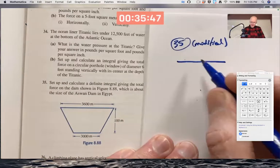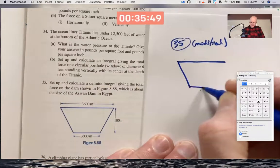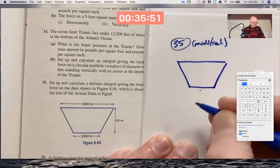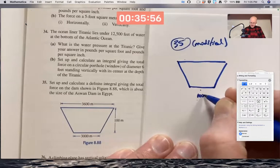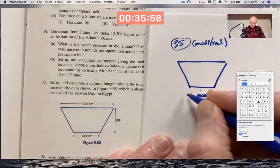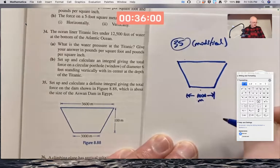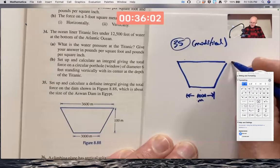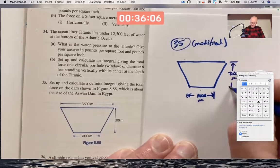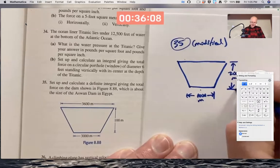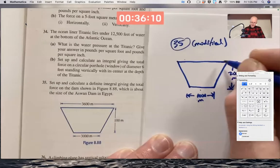Still use the same shape, trapezoid, but let's let the distances be different. Let's let this distance here be 1,000 meters. Let's let this one be 200 meters. So now we're using SI units to start with. And let's let this distance here be 1,500 meters.